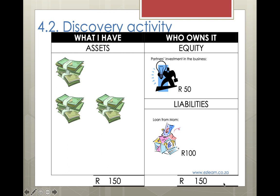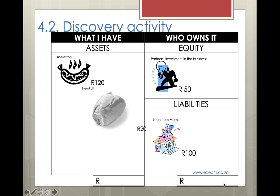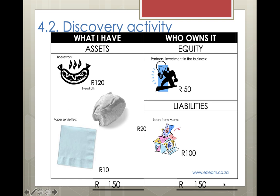Now it's time to start your business. You need to go shopping and you spend all of that 150 Rand at once — 120 Rand for delicious boerewors, 20 Rand on fresh rolls, and 10 Rand on paper serviettes so that you can handle them nicely when you hand them to your customers. You can see you've still got 150 Rand on both sides, but your cash has now turned into stock of things that you are going to sell.